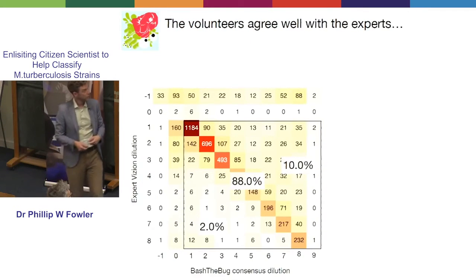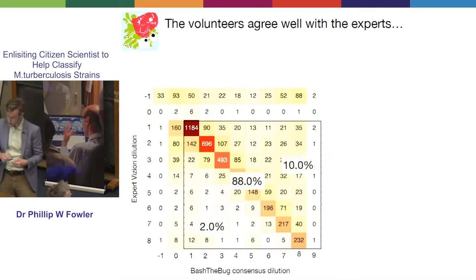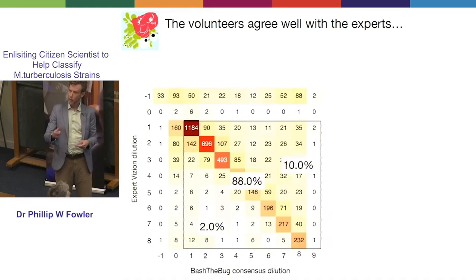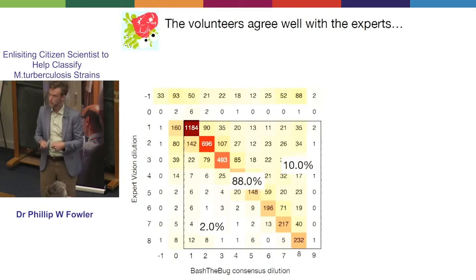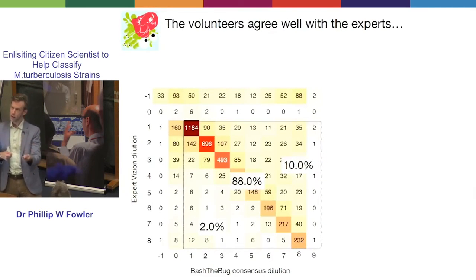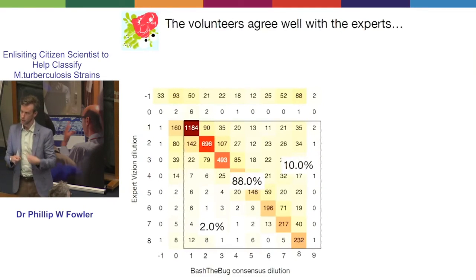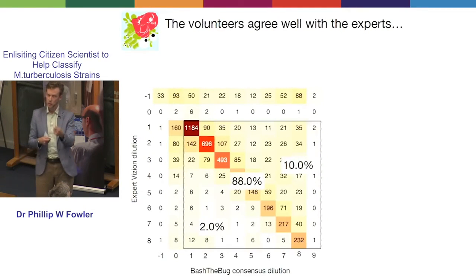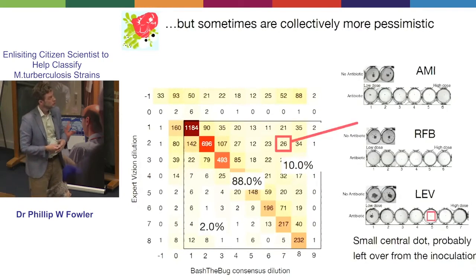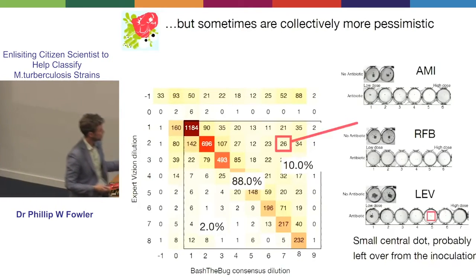Overall — and this is still fairly preliminary, looking at the first data set — the consensus of the volunteers agrees very well with the experts. A bit less than 90% of the time they're within a well of the experts. Interestingly, where they tend to disagree, it's that the volunteers are giving a higher number for the well than the experts — in other words, they're being a little bit more pessimistic. You can see that when you pull out some of the examples: for amikacin, rifabutin and levofloxacin, these are all difficult images to read.